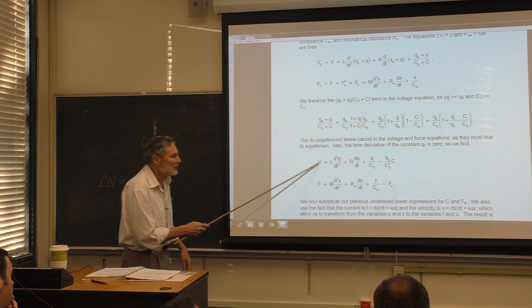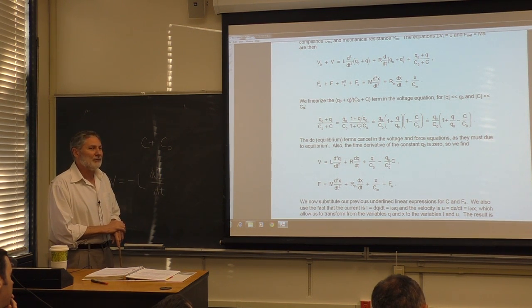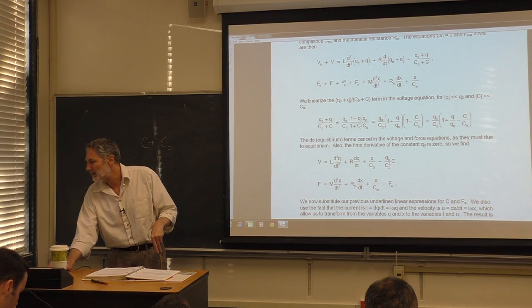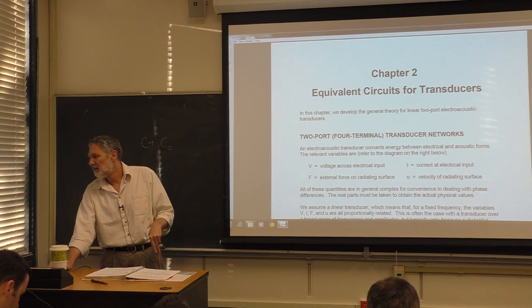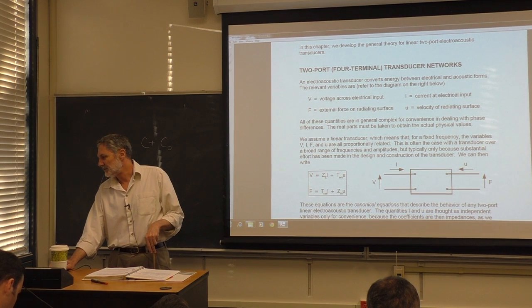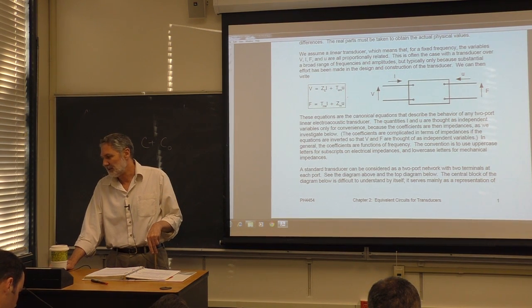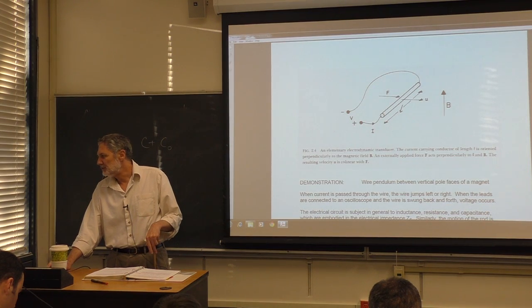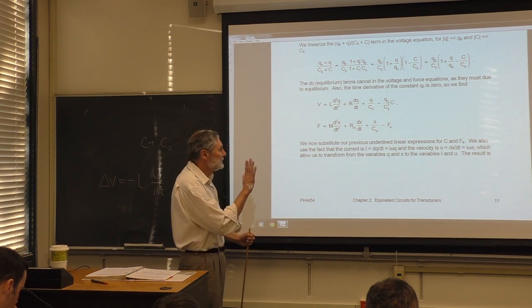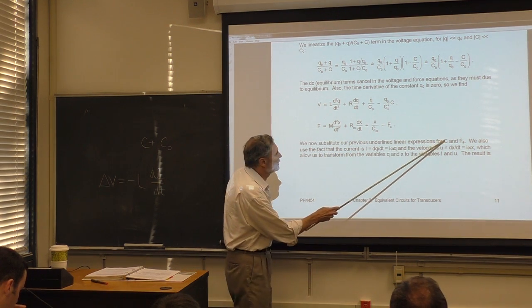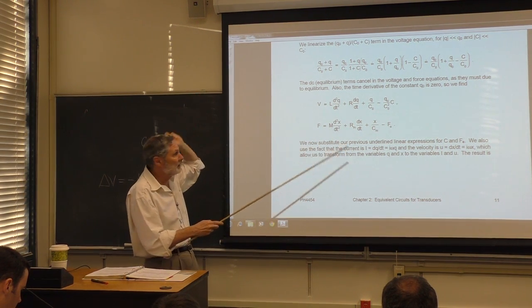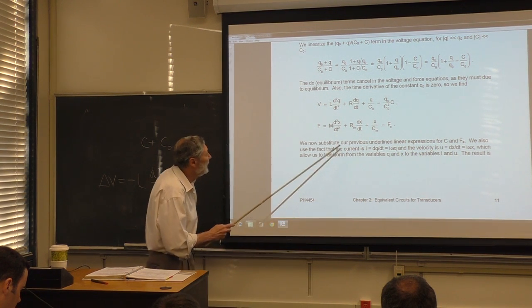Here's what we're left with after cancellation — we're edging toward the canonical form. We substitute our expressions for the fluctuating capacitance and electric force to reduce everything to canonical variables: current I and velocity u.